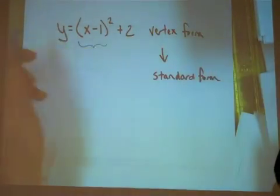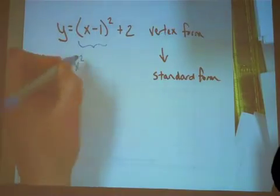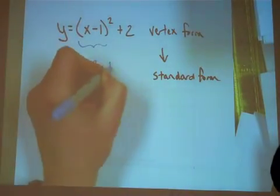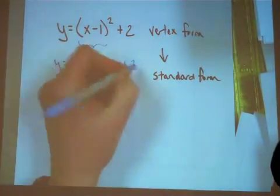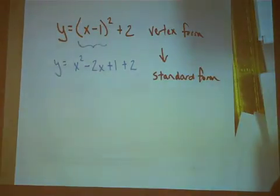Choose your favorite way of dealing with squaring two binomials. You'll get x squared minus 2x plus 1. Don't forget to bring down the plus 2.